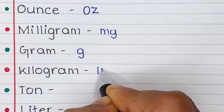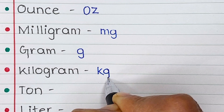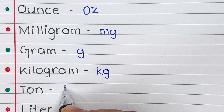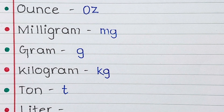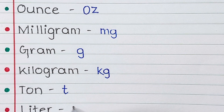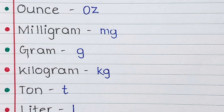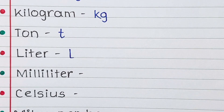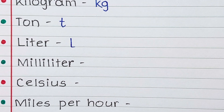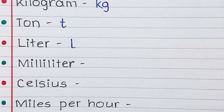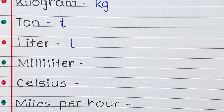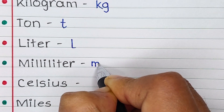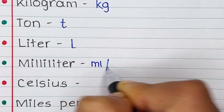Next is kilogram. Kilogram is written as kg. Next is ton. Ton is abbreviated as small letter t. Next is liter. Liter is abbreviated as letter l. Next is milliliter. Milliliter is written as ml.